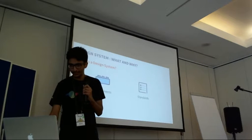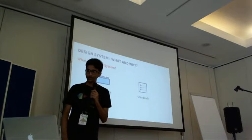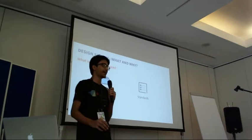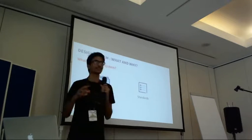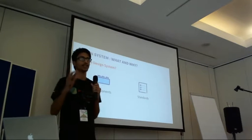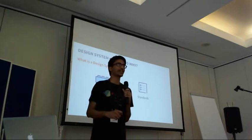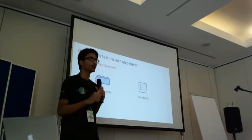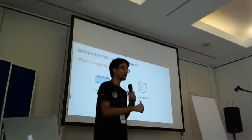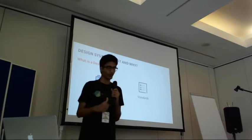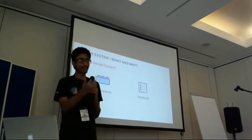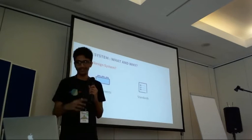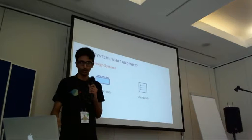Let me go into the two main points: components and standards. Components basically means the UI components — the buttons, the forms, how things will look. Standards are basically where, why, and how to use those components. There are guidelines on when, where, and how to use them — essentially documentation on using the components.